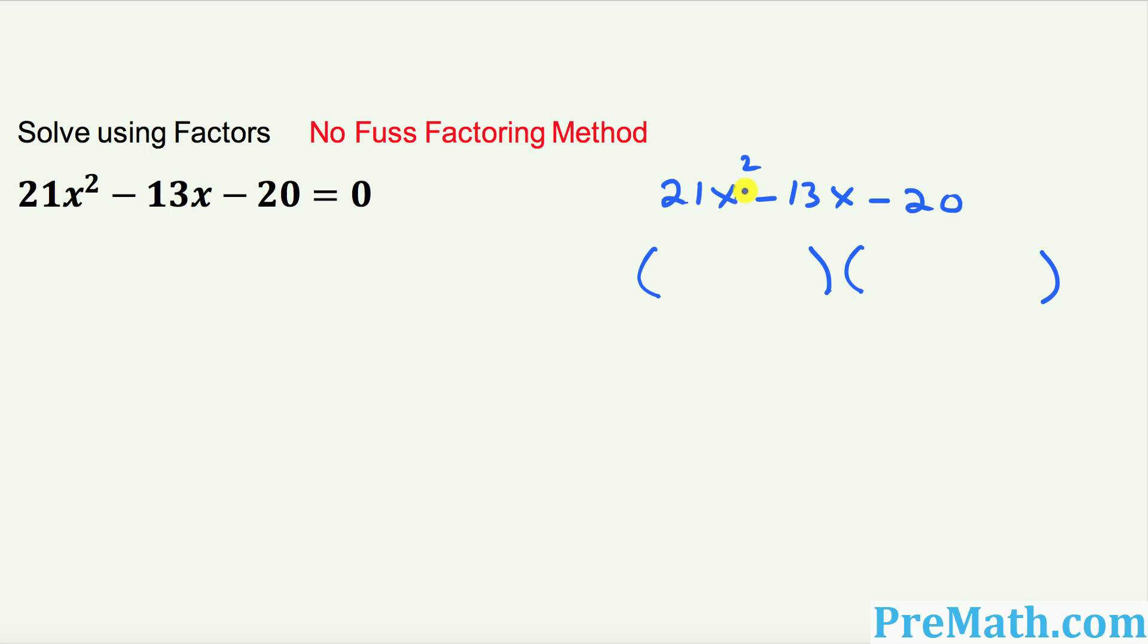The next step after that one, I want you to just put down this part only, this portion 21x. Just disregard this exponent part. So I want you to write down 21x and 21x. Next step, I want you to multiply these two end numbers, which is 21 times 20.